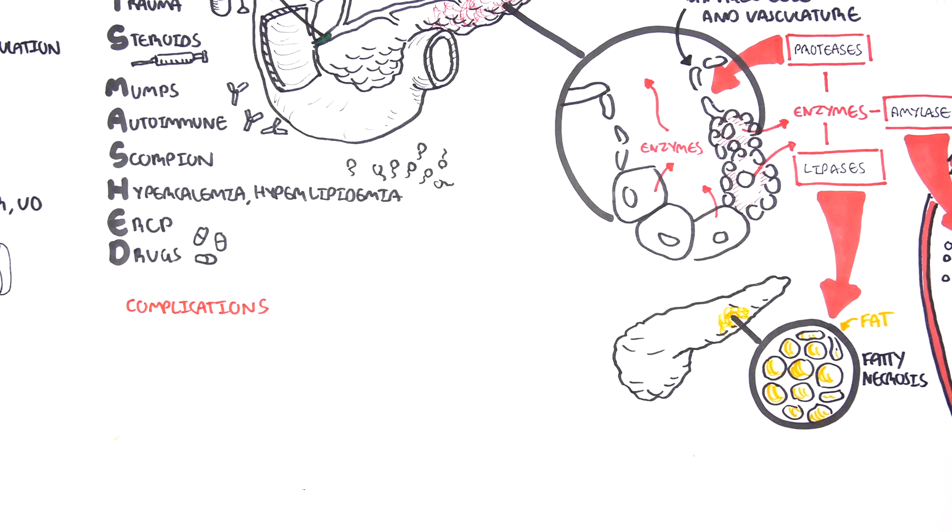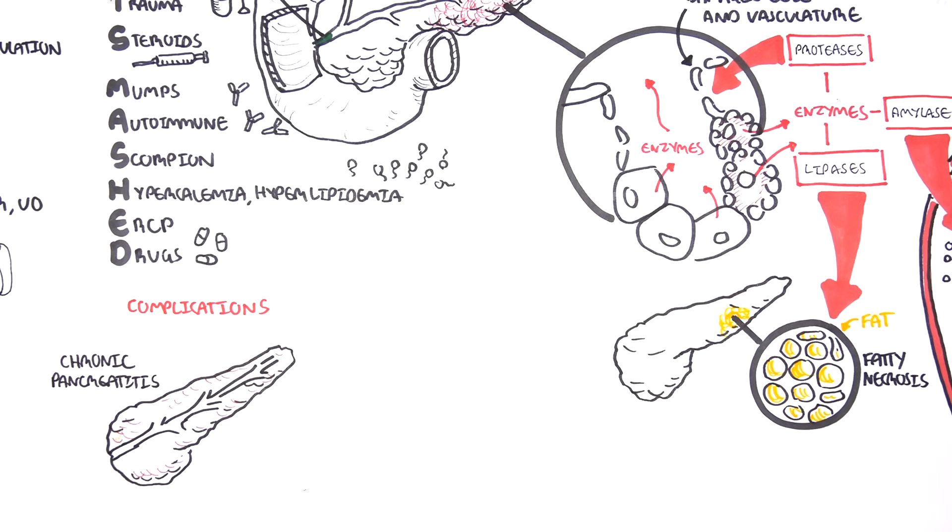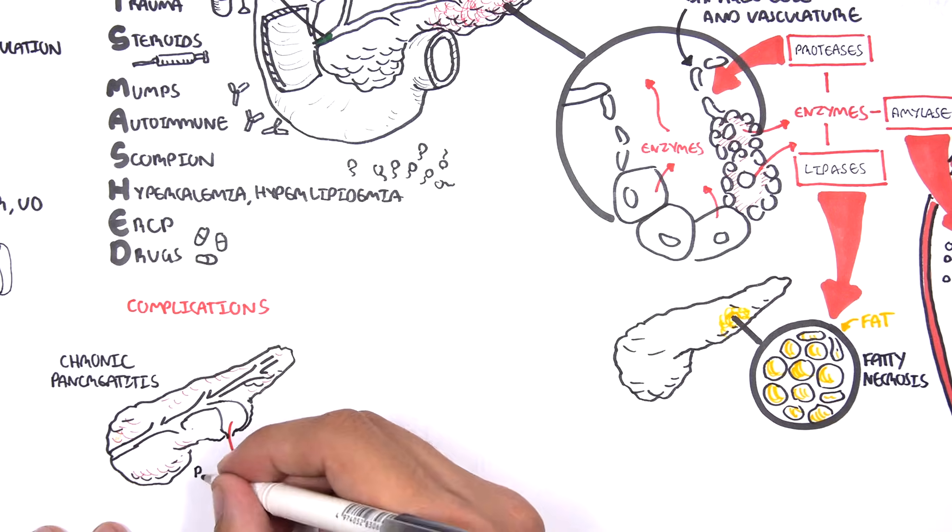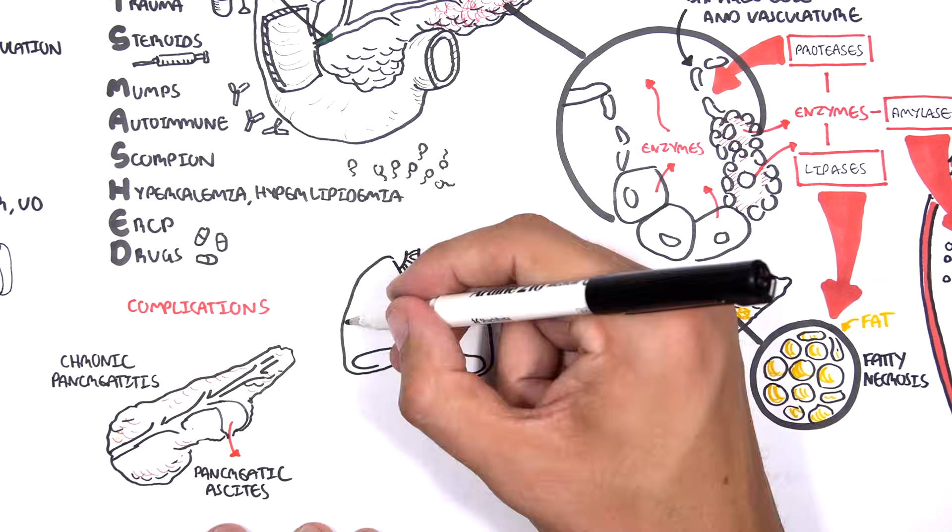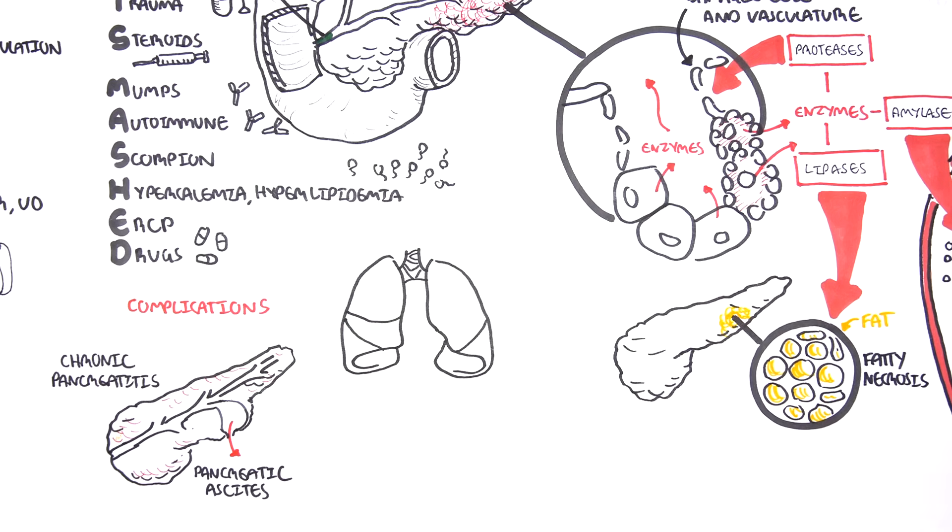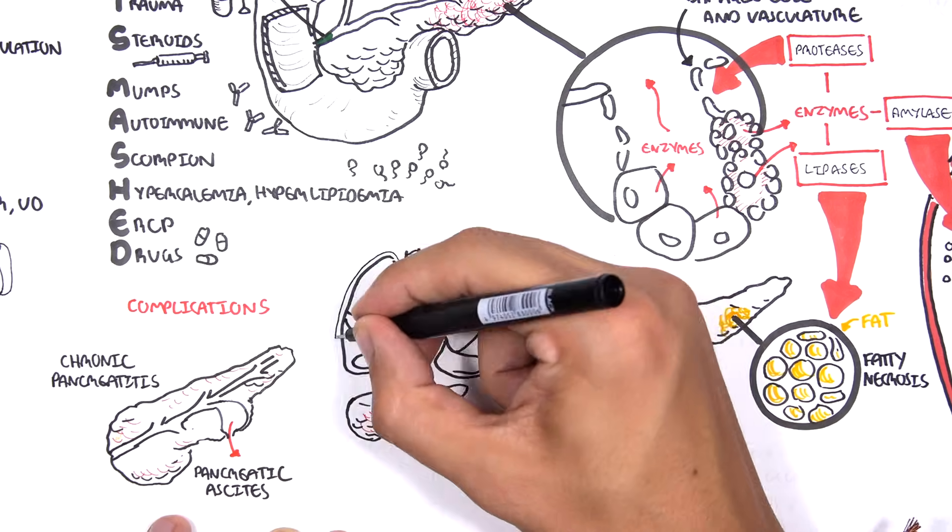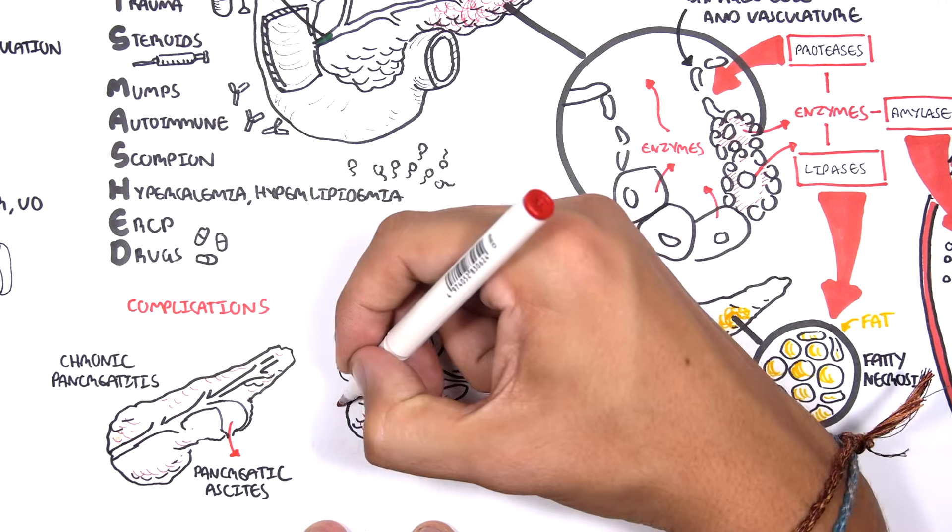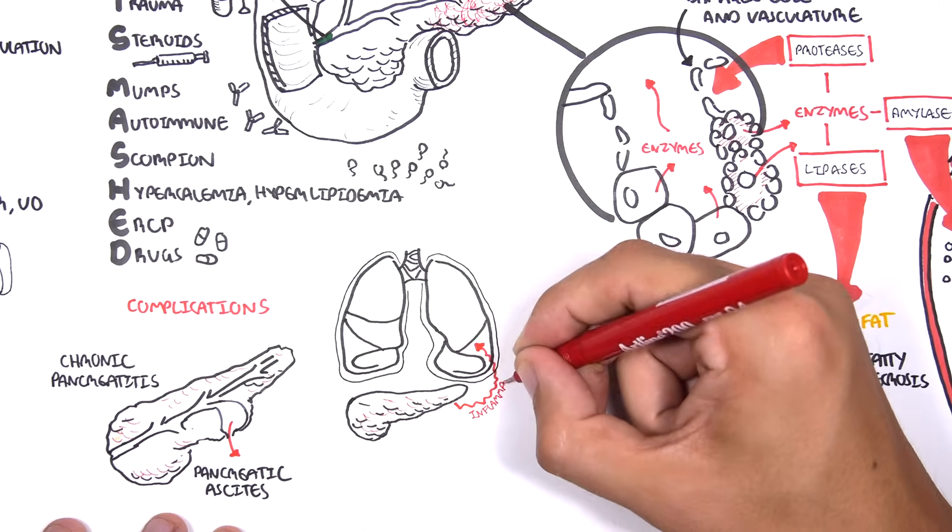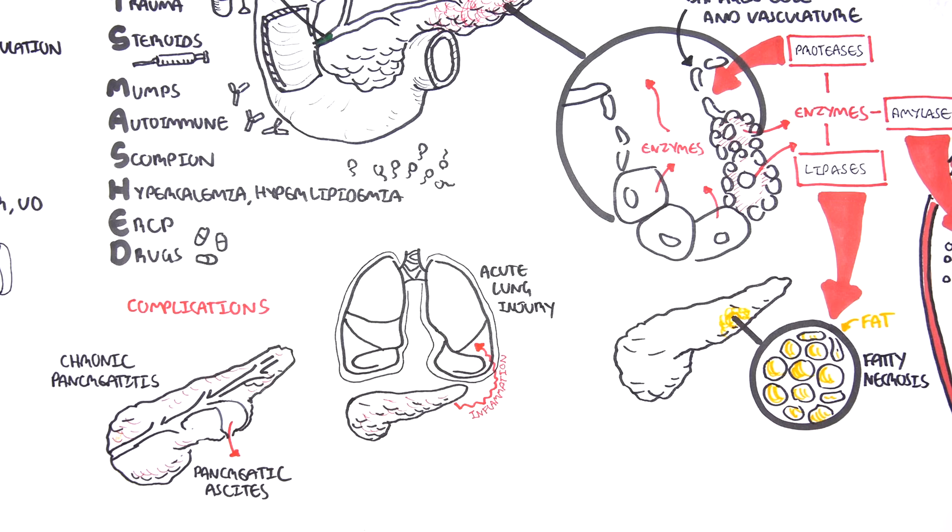Complications of acute pancreatitis include chronic pancreatitis, pancreatic ascites. Another important complication of pancreatitis involves the lungs. Because the pancreas sits below the diaphragm, under the lung, inflammation that occurs can spread locally and cause acute lung injury.